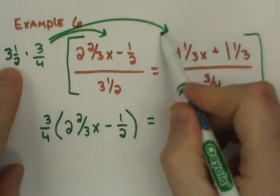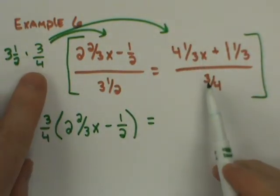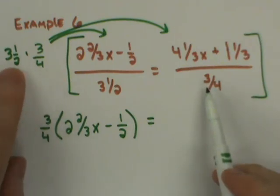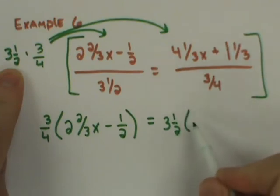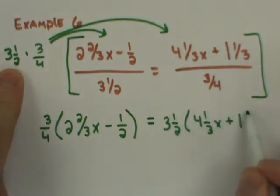And then when I move to the second fraction, we're going to do the same thing. We'll see that the 3 fourths portion of our common denominator drops out. So I'm left with 3 and 1 half times 4 and 1 third x plus 1 and 1 third.